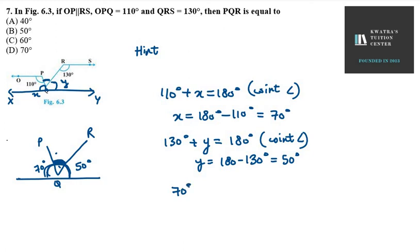70 plus PQR plus 50 degrees equals 180 degrees because it's a straight line. So it will be 180 minus 120 degrees.